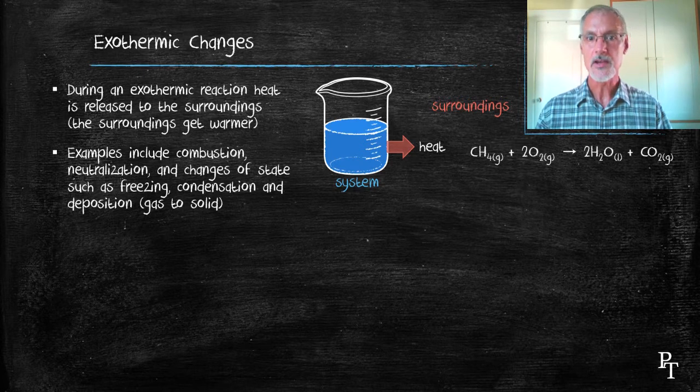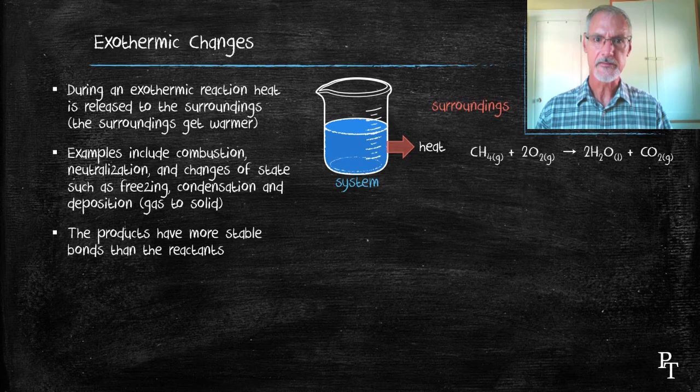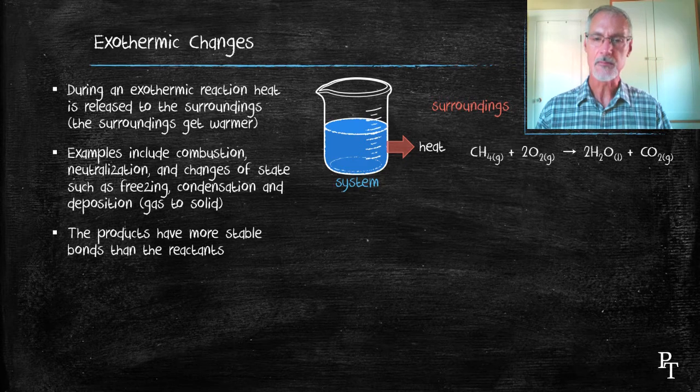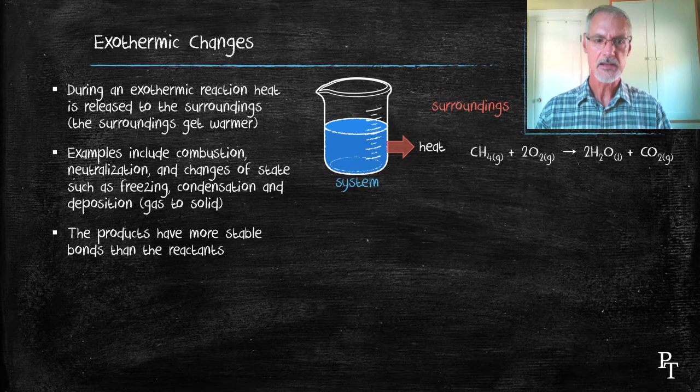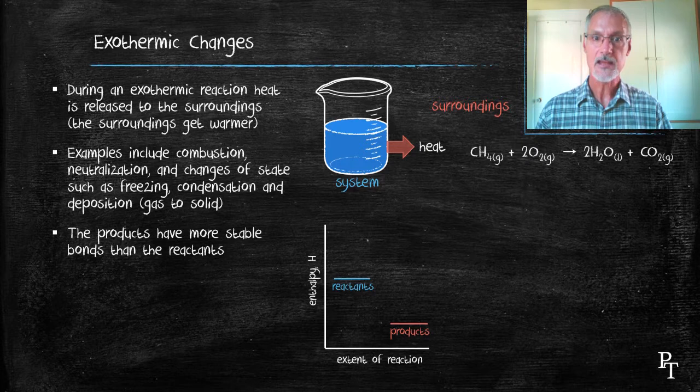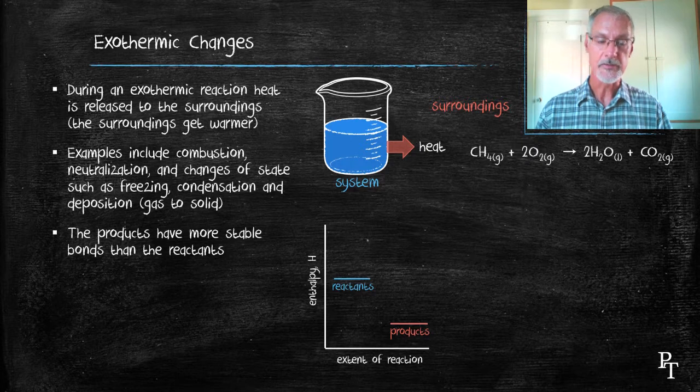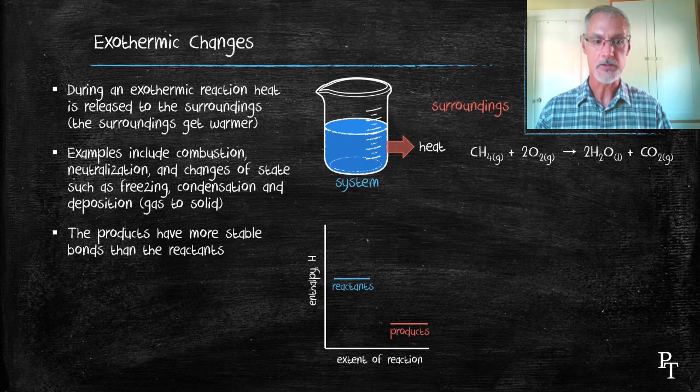Here's an example of a combustion reaction. In this case, the combustion of methane. The products of these reactions are generally more stable than the reactants. I'm going to indicate this in what's called an energy diagram, where I have the enthalpy on the left-hand side and the extent of the reaction, or reaction pathway, on the right-hand side.